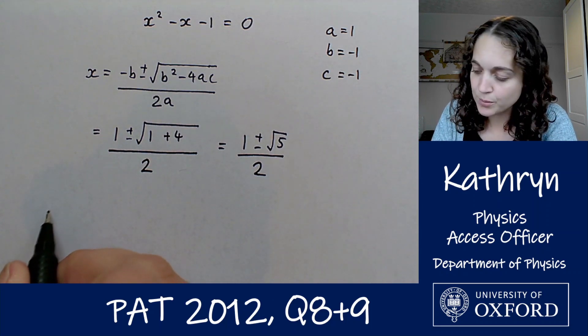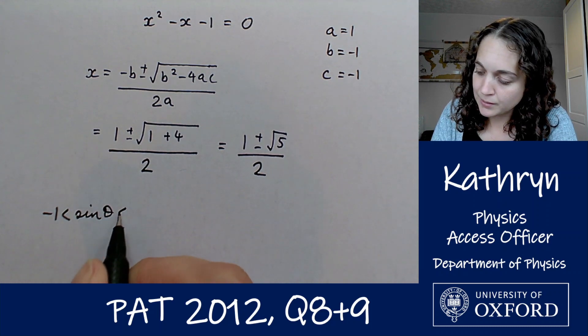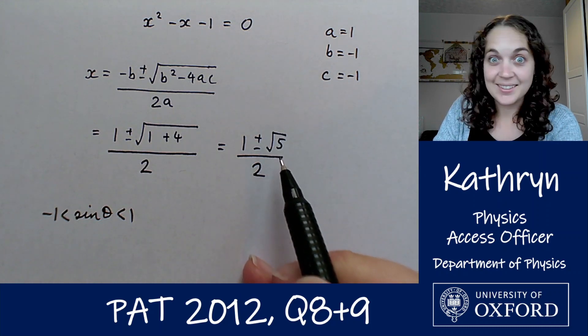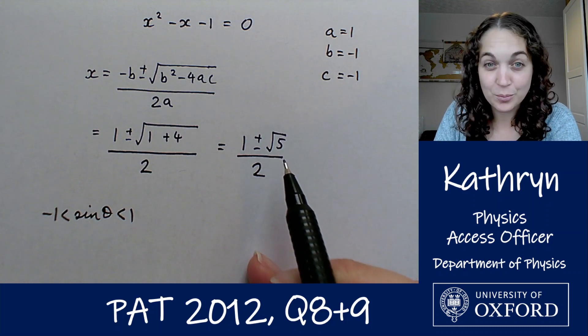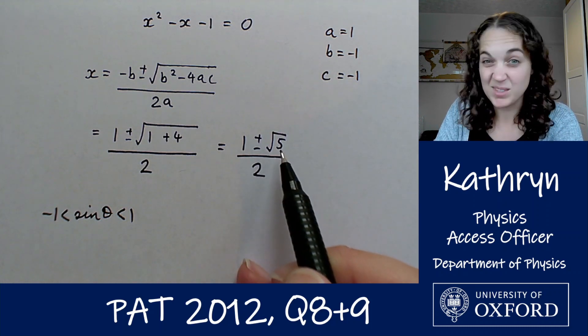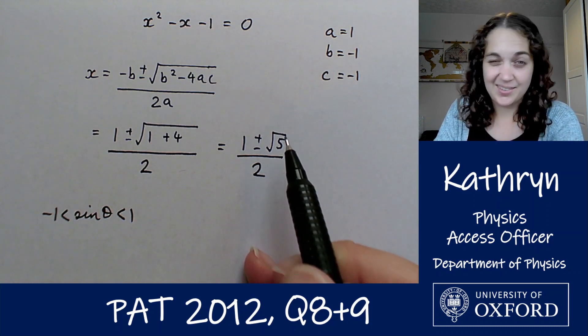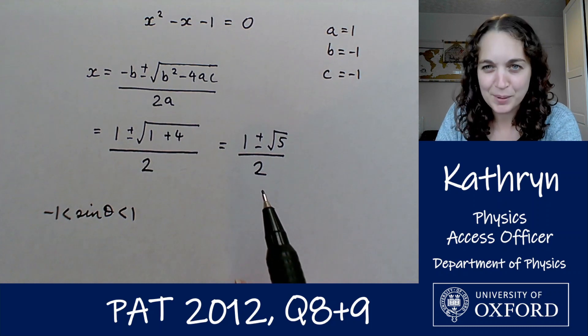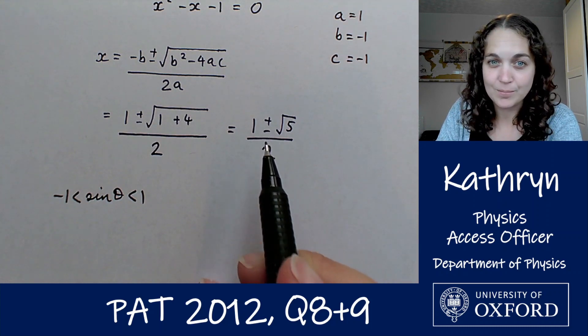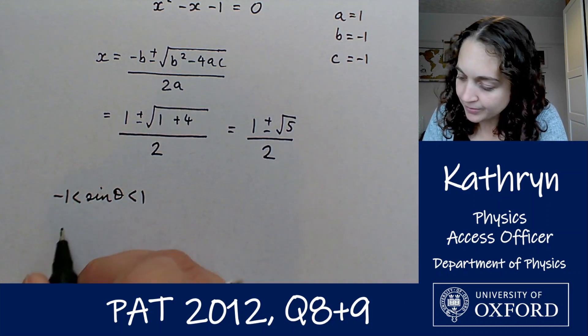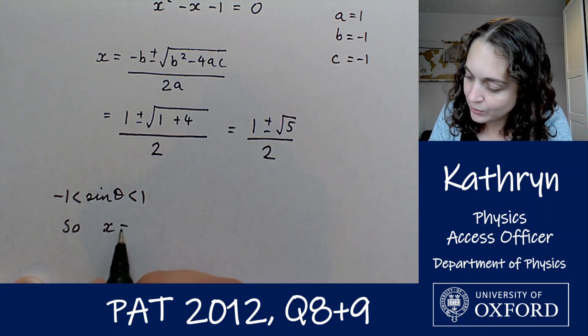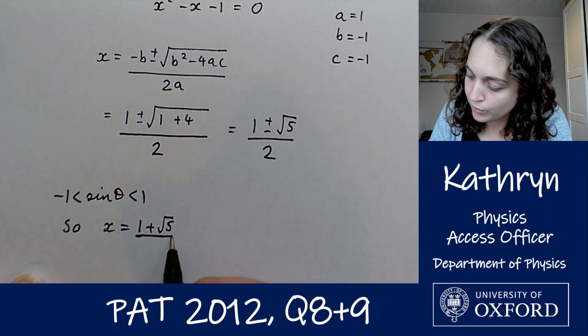So that's our answer for what x could be, and remember we've got two answers here. We've got the solution where we use the plus and the solution where we use the minus. But let's not forget that x = sinθ, and we know something about sinθ. We know that sinθ has got to be between -1 and 1, and we need to check that these solutions work, that these solutions sit within that. And we can see that they don't, because √5, I don't know the value off the top of my head, but I know that it's going to be bigger than 2 because √4 is 2. So if we've got 1 plus something bigger than 2 divided by 2, that's something along the lines of something bigger than 3 over 2, which is definitely bigger than 1. So the only solution can be the one that uses the subtraction, so 1 - √5 over 2. So sinθ has got to be between -1 and 1, so x = (1 + √5)/2 cannot be a solution.